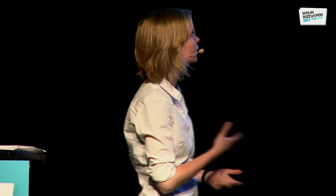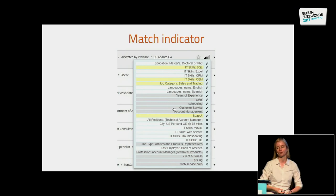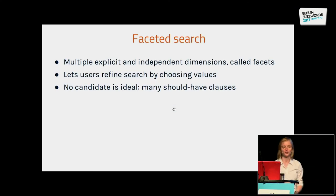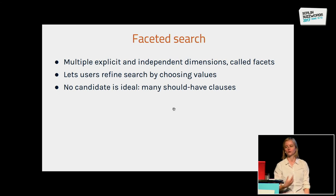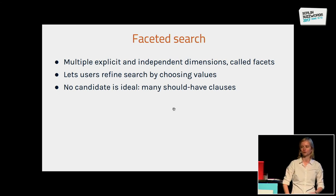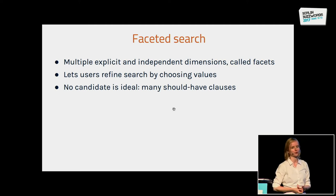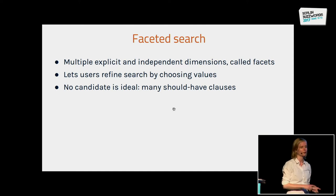We also have a pair result and this match indicator where you can see how many of these query part items or facet items actually match your CV or document. This is a typical example of faceted search, where you have multiple explicit and independent dimensions, and you let users refine the search by choosing values. This is very common in e-commerce, for example, where you can filter on brand, price, product category, or color.